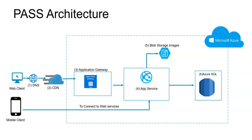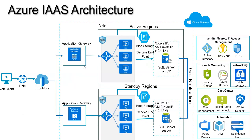In the PaaS architecture you will see an application gateway, app services, and blob storage for images. The application gateway provides a single point of entry to your app services, whether it is a web application or VMs. Similarly, in the Azure IaaS architecture — the previous one being PaaS — you have many other components involved, including blob storage, SQL server, and plenty of other components that complement your entire application servers.